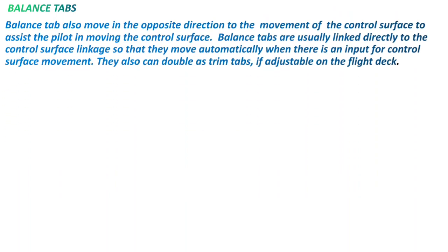Balance tabs also move in the opposite direction to the movement of the control surface to assist the pilot in moving the control surface. Balance tabs are usually linked directly to the control surface linkage so that they move automatically when there is an input for control surface movement. They can also double as a trim tab if adjustment in flight is needed.